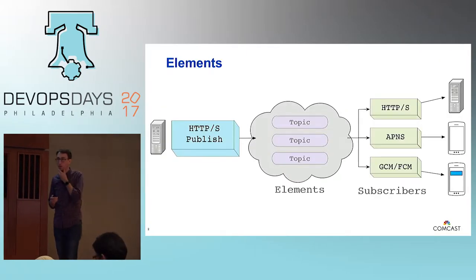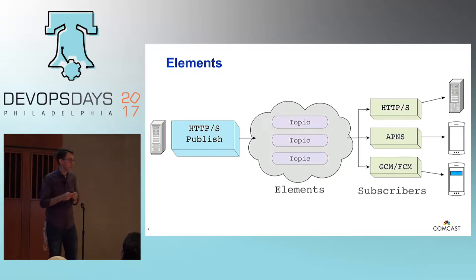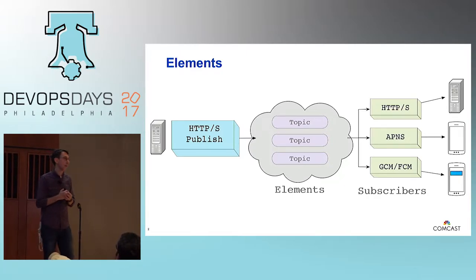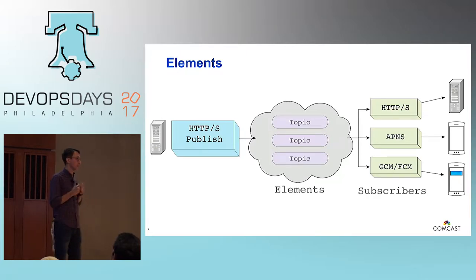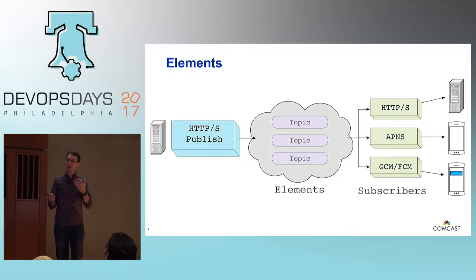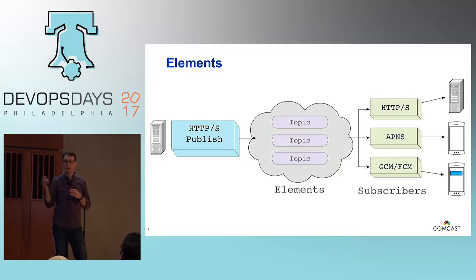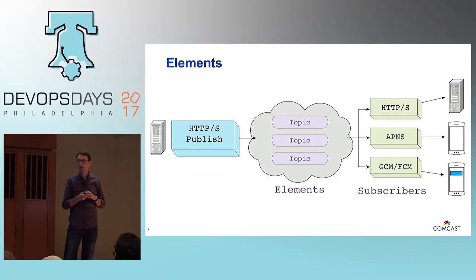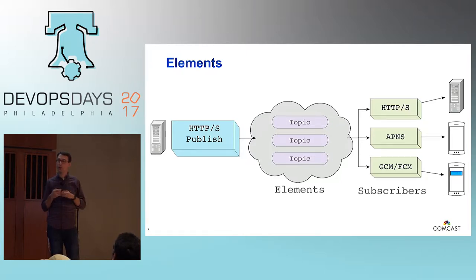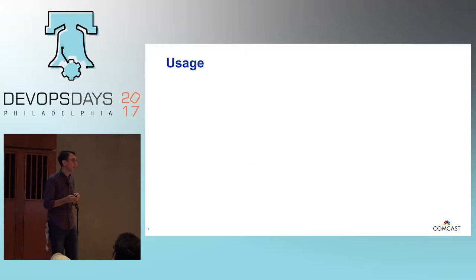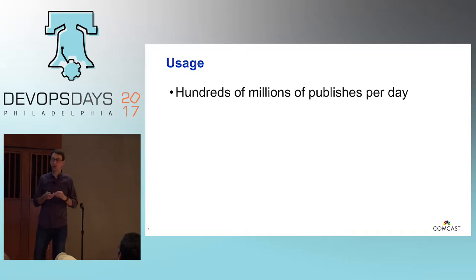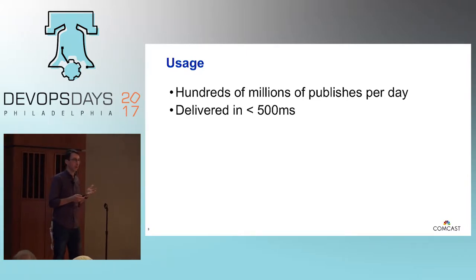I want to go over a little bit about the application I work on and how it fits into this talk. It's called Elements — it's a notification service, PubSub style, similar to Amazon SNS. Clients publish traffic over HTTP to an endpoint on a topic, and we send that traffic out over HTTP to some endpoint or to mobile devices — Apple or Android. The traffic we support includes things like call ID, SMS, SMTP, and email for all Comcast customers, and some Xfinity home events. The usage is about hundreds of millions of publishes per day — a lot of traffic.